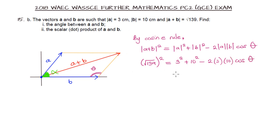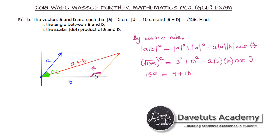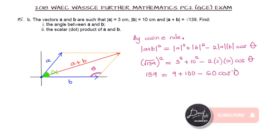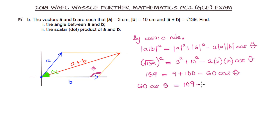We don't know theta, but we know the other values. The square root and the square cancel, giving 139. Then 3 squared is 9, 10 squared is 100, and 2 times 3 times 10 is 60. Moving 60 cos theta to the left-hand side: 9 plus 100 is 109, and 139 moves to the right-hand side as minus 139, giving 60 cos theta equals minus 30. Dividing both sides by 60, we get cos theta equals minus 1 over 2, which is minus 0.5.